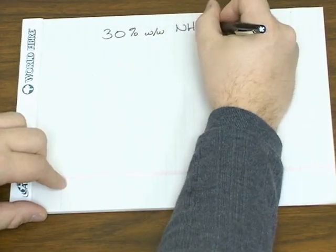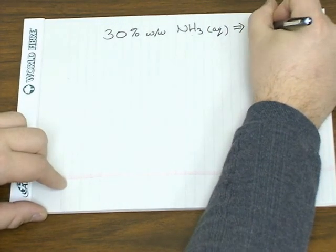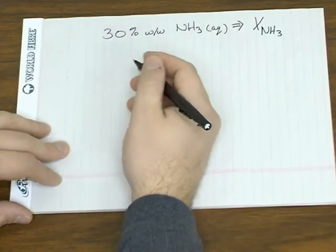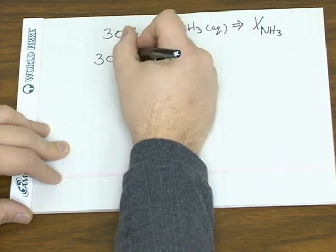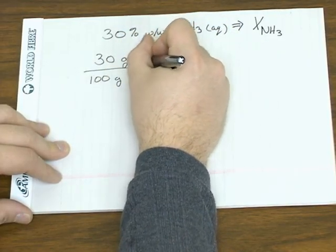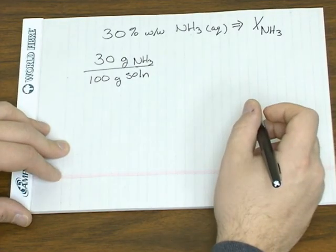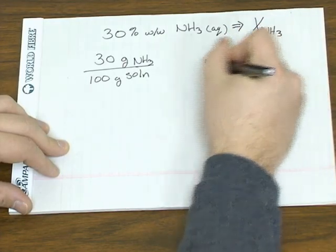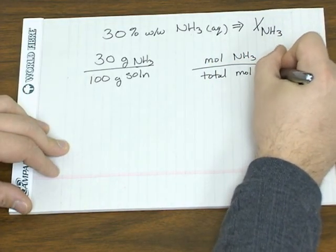So let's take that same 30% by mass solution of aqueous ammonia and convert that to a concentration that's in units of mole fraction. So once again, we'll start with the unit of concentration we have. So 30% means that you've got 30 grams of ammonia per 100 grams of solution. Mole fraction, you want the moles of ammonia over the total moles of the solution.